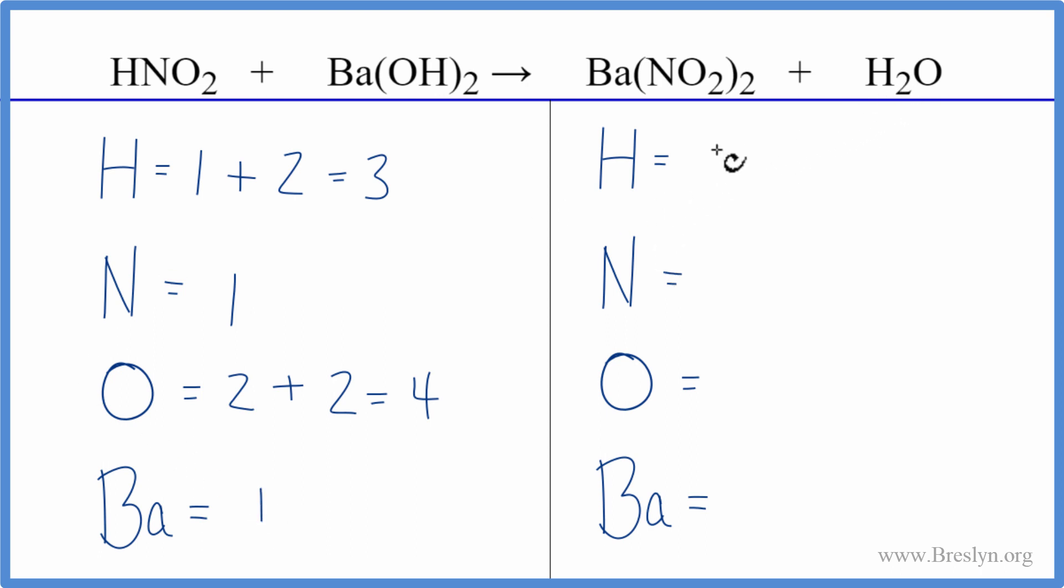On the product side, we have two hydrogen atoms. We have one nitrogen times two, so we have two of those. Oxygens, two times two, that gives us four, plus we have one here with the water, five oxygen atoms, and barium, we have just one.